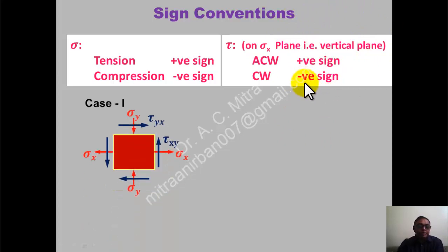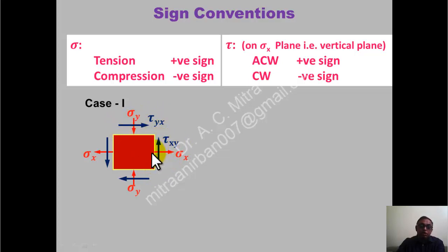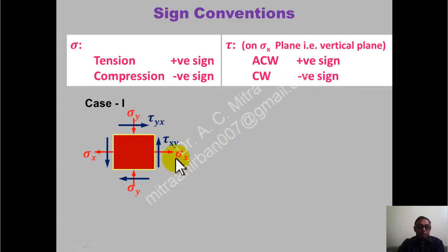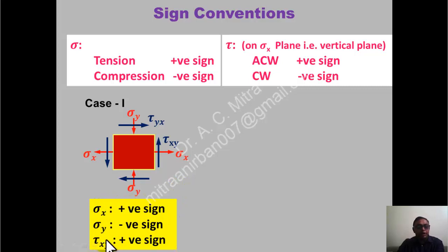Here are two case studies. In the first diagram: sigma x is outward from the body — tension, positive. Sigma y is towards the body — compression, negative. For tau xy, always check the sign convention on the vertical plane (plane of sigma x), not the horizontal plane. If tau xy is rotating anticlockwise on the vertical plane, it is positive. So for this case: sigma x positive, sigma y negative, tau xy positive.